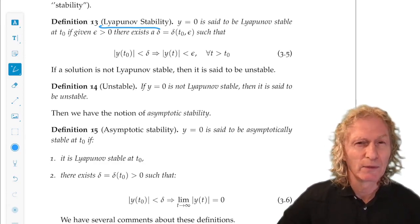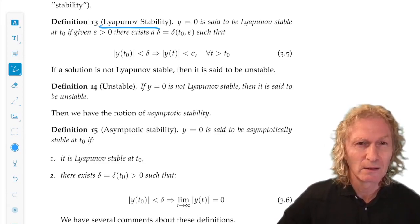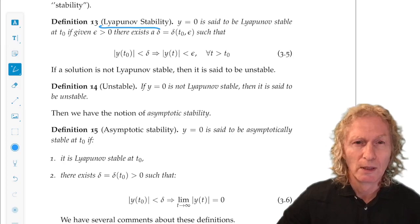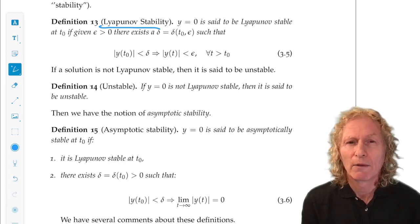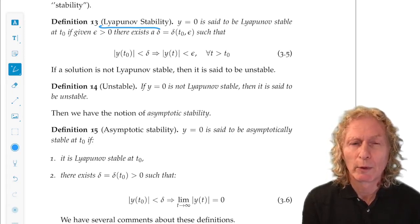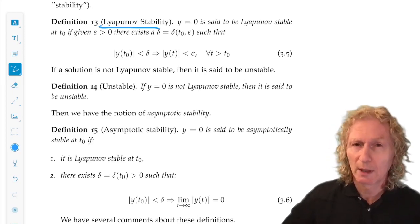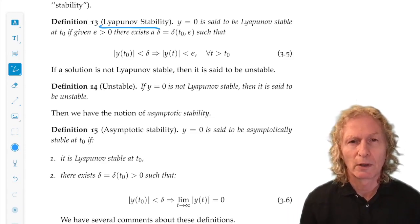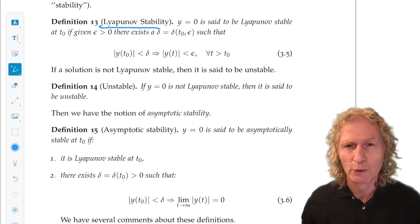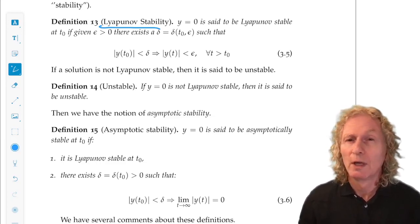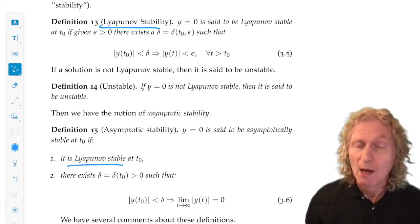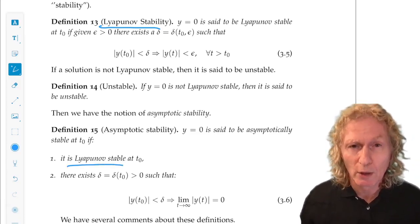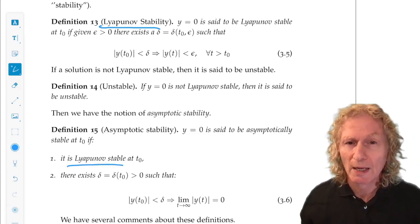And if the solution is not Lyapunov stable, then we say it's unstable. Now we have a more refined definition, asymptotic stability. It's not just that if we start close, we hang around that solution forever, so it's Lyapunov stable. But we also get closer and closer and closer as time goes to infinity.